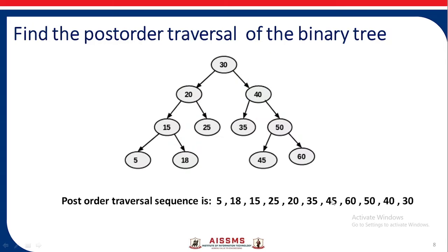Again, find the post-order traversal of the binary tree. We apply the post-order algorithm — first visit the left subtree, then the right subtree, then the root. We get: 5, 18, 15, 25, 20, 35, 45, 60, 50, 40, 30. So the post-order traversal sequence is 5, 18, 15, 25, 20, 35, 45, 60, 50, 40, 30.